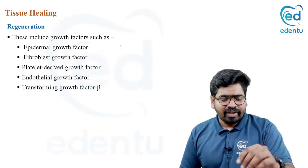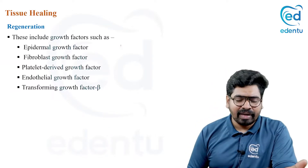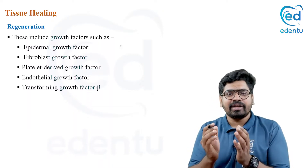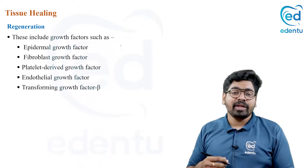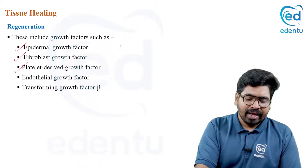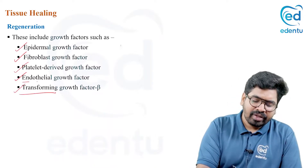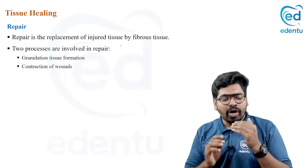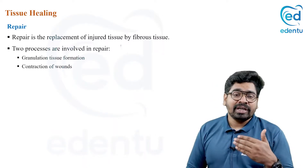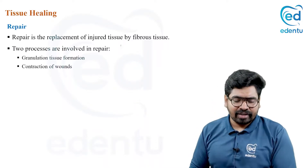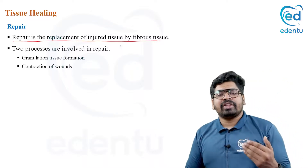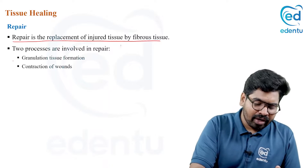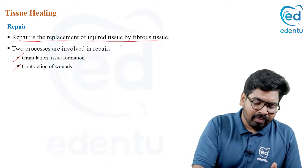For regeneration, certain cellular growth factors help the parenchymal cells proliferate. These growth factors include epidermal growth factor, fibroblast growth factor, platelet-derived growth factor, endothelial growth factor, and transforming growth factor. For repair, it is not by growth factors but by replacement of the lost structure by fibrous tissue, which occurs by granulation tissue formation and by contraction of the wound.